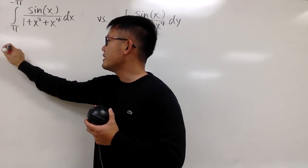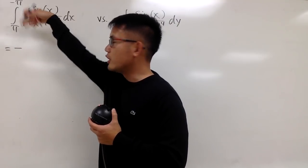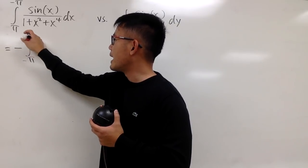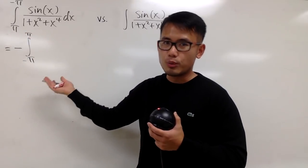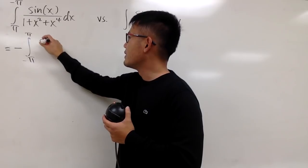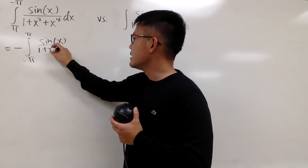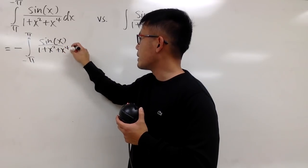This is going to be negative, and then change the order of integration, and you get negative π down here, and then π. This is just one of the integral properties. And then you still have the inside stays the same: sin(x) over 1 plus x squared plus x to the fourth power dx.